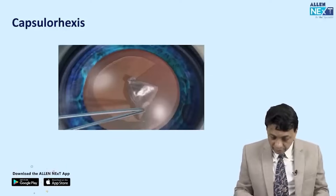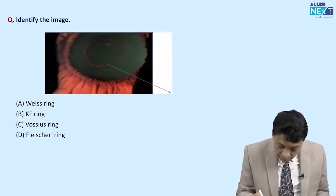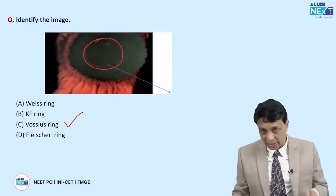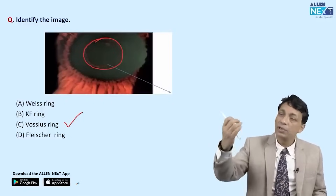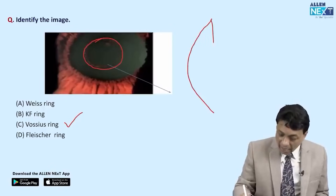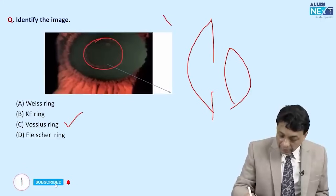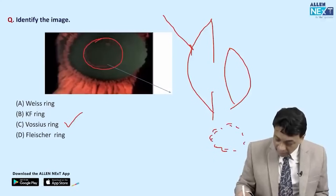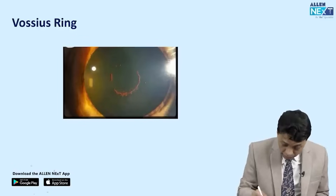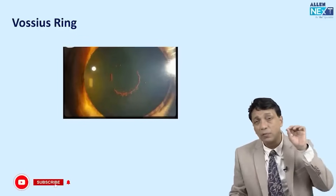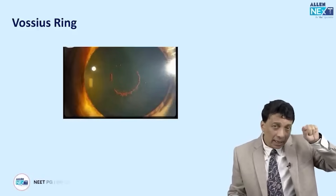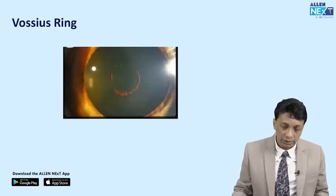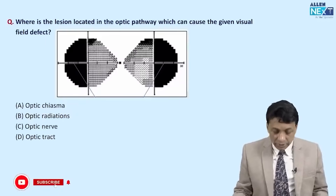Identify the image showing a brown ring on top of the lens — this is the Vossius ring. It occurs when the eye is hit by trauma: the iris strikes against the lens capsule and imprints its pigmented pupillary margin onto the anterior lens capsule, creating a ring of pigment. The Vossius ring is a sign of old ocular trauma. Recognize it in the exam.